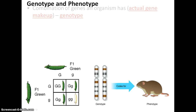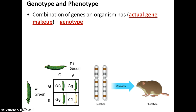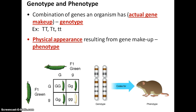Now, genotype and phenotype. The combination of genes in an organism — the actual genetic makeup, what alleles they have on the inside — we call the genotype. So whether you're homozygous dominant, heterozygous, or homozygous recessive, that's your genotype. The expression of those genes is called your phenotype — it's the physical appearance, what you actually see. In our hitchhiker's thumb example, whether or not you have a hitchhiker's thumb or a straight thumb is your phenotype.